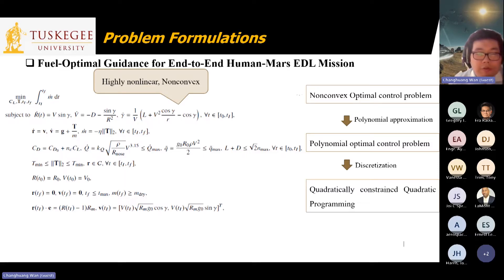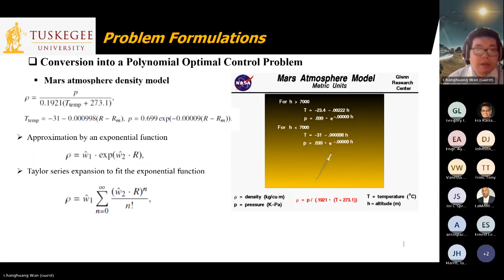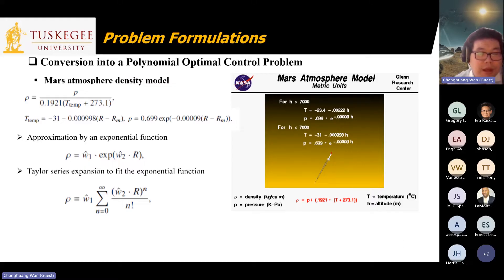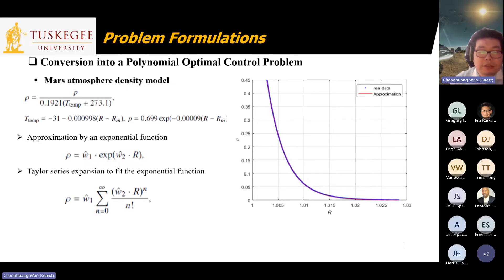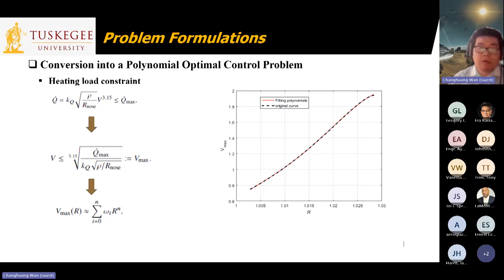For this non-convex optimal control problem, we first use polynomial approximation to transfer it into a polynomial optimal control problem, and then apply discretization to formulate it as a quadratically constrained quadratic program. As an example of how these transfers work, for the Mars atmosphere density model — which is an exponential function of altitude — we approximate it by first ensuring all values are positive, then using a Taylor series expansion to fit the curve as a polynomial function of radial distance. Real data analysis confirms the approximation fits quite well.